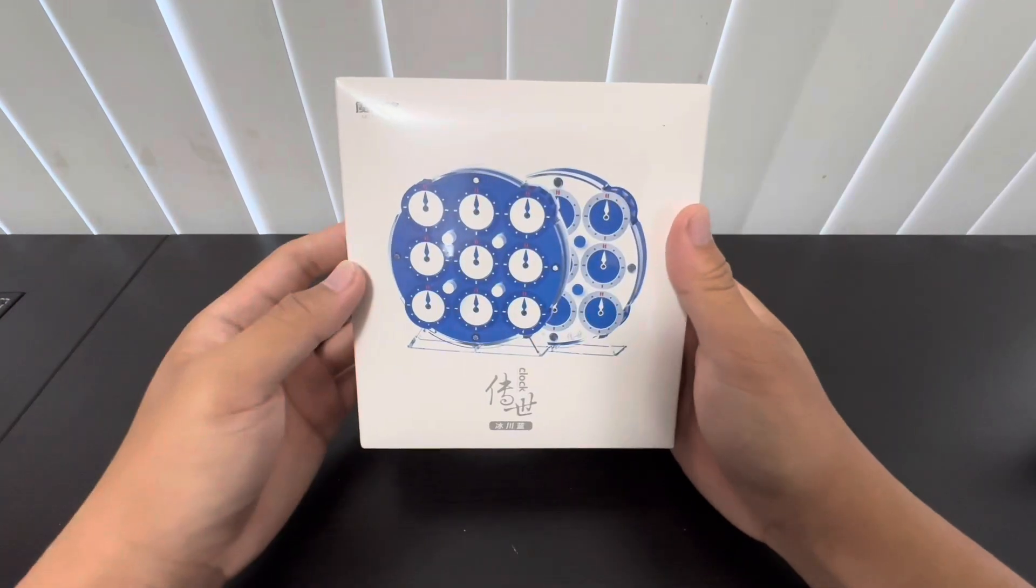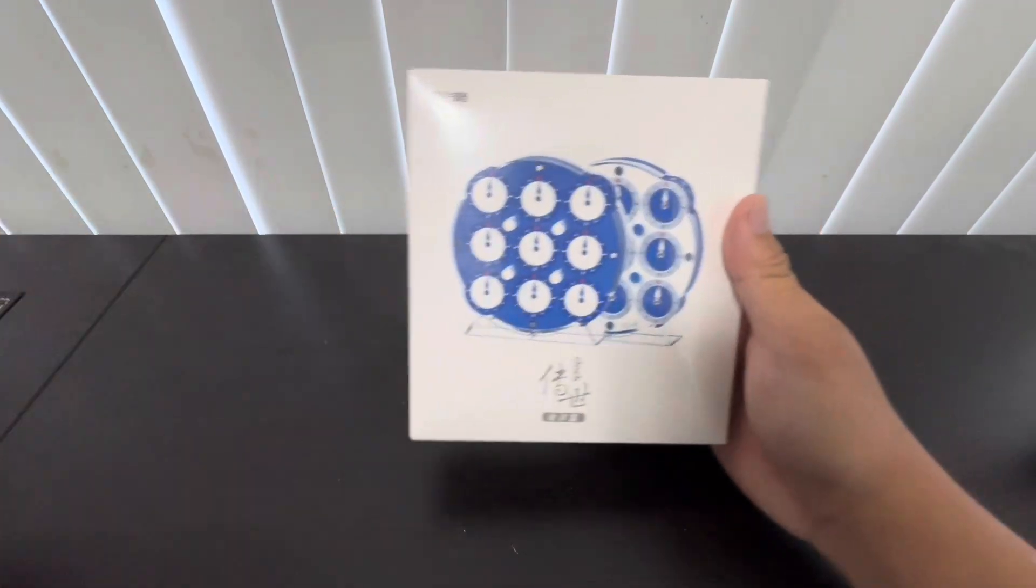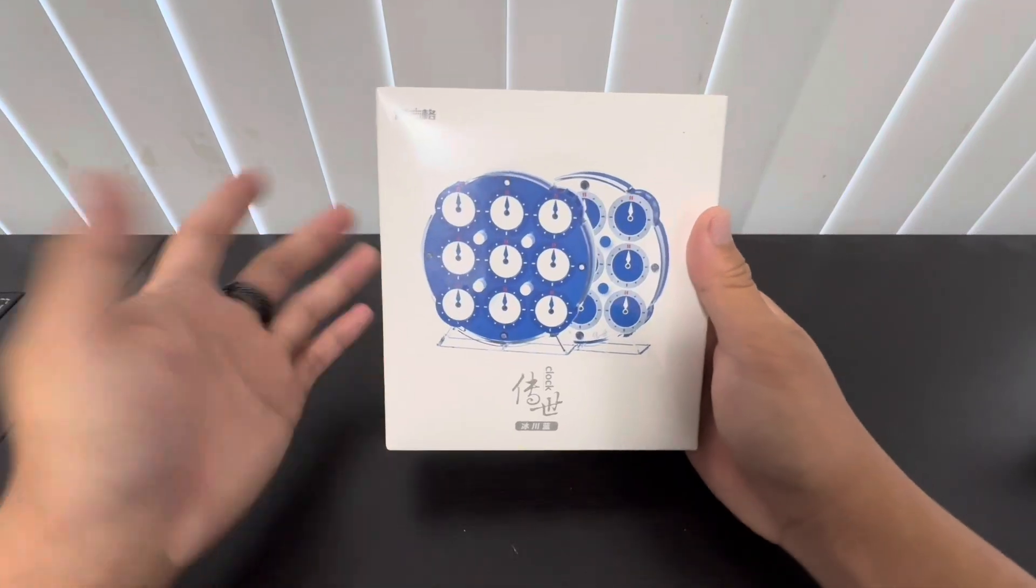So this version of the Qiyi clock has an updated magnet scheme, extremely similar to the limited edition one. And the most notable difference is that it's blue.